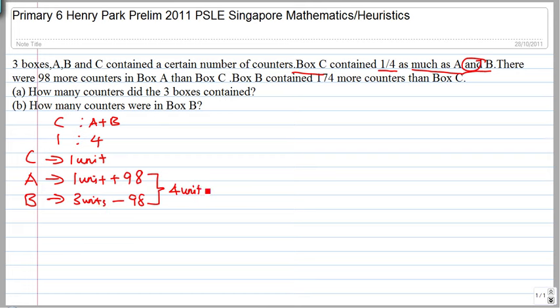Box B contain 174 more counters than box C. So let's draw box B. Box B has got three units minus 98. It's quite right, you know, when it comes to modeling, modeling doesn't go well with negative sign.